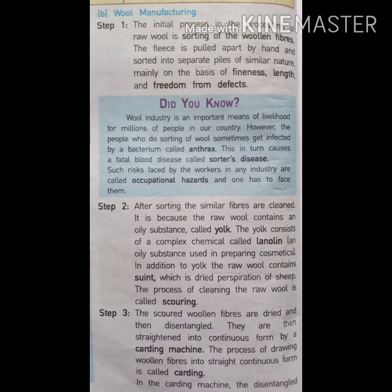In addition to yolk, raw wool contains suint, which is dried perspiration of sheep. The process of cleaning raw wool is known as scouring. Scouring is the process in which the raw wool is cleaned to remove unwanted material like yolk.